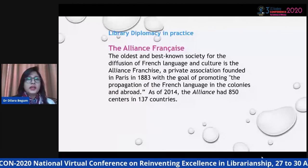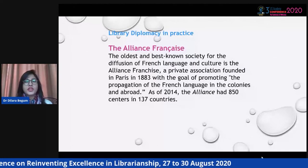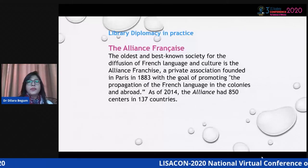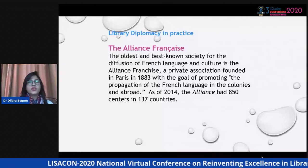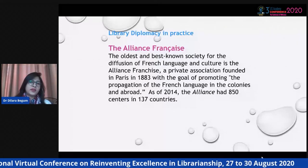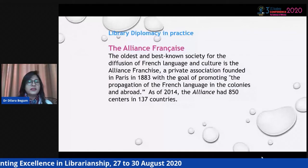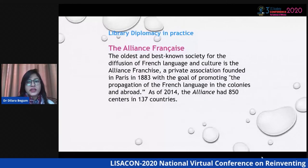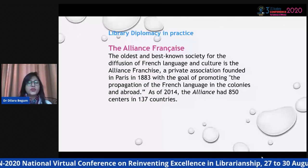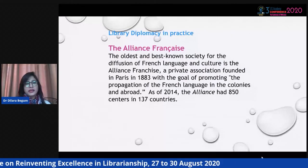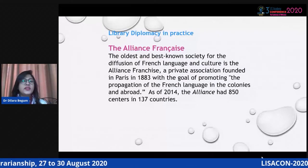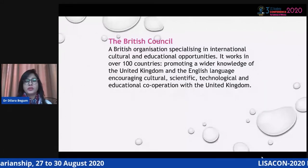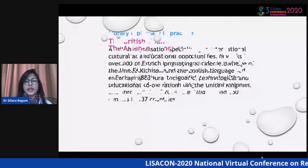I have given some examples of library diplomacy practices, especially in Bangladesh. The Alliance Française is the oldest and best-known society for the diffusion of French language and culture — a private association founded in Paris in 1883, with the goal of promoting the propagation of the French language in the colonies and abroad. As of 2014, the Alliance Française had 850 centers in 137 countries. This is an example of library diplomacy in practice.